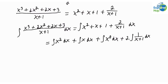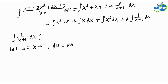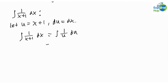Now, to find the antiderivative of 1 over x plus 1, we can apply the method of substitution. So we'll let u be equal to x plus 1, which means that du is equal to dx. So the integral of 1 over x plus 1 is equal to the integral of 1 over u du, which equals ln of the absolute value of u plus some constant c. Subbing u equals x plus 1 back in, this is equal to ln of the absolute value of x plus 1 plus some constant c.